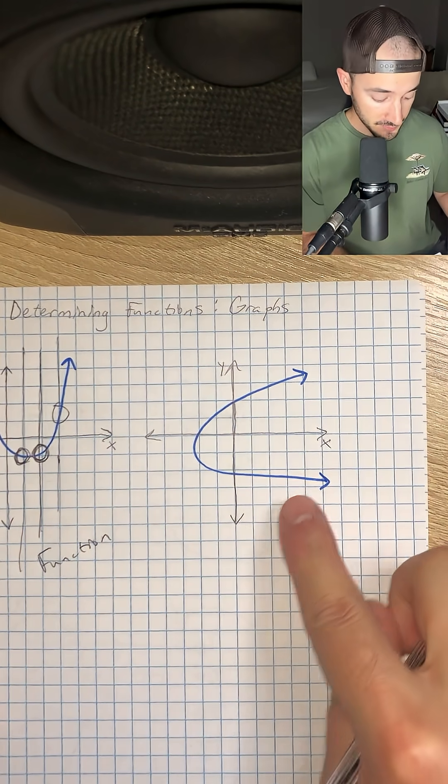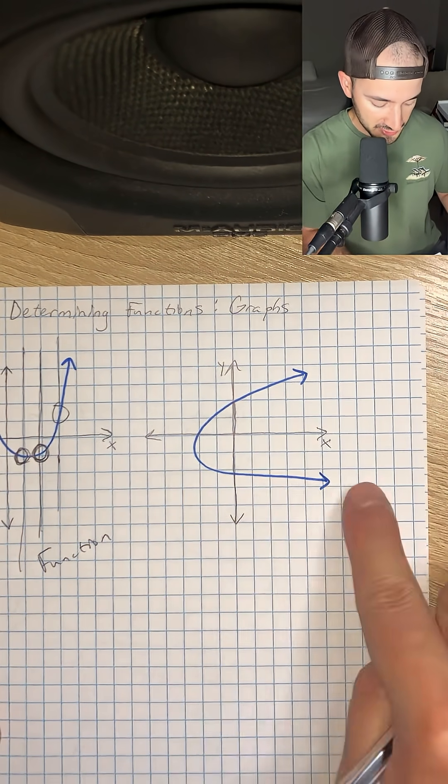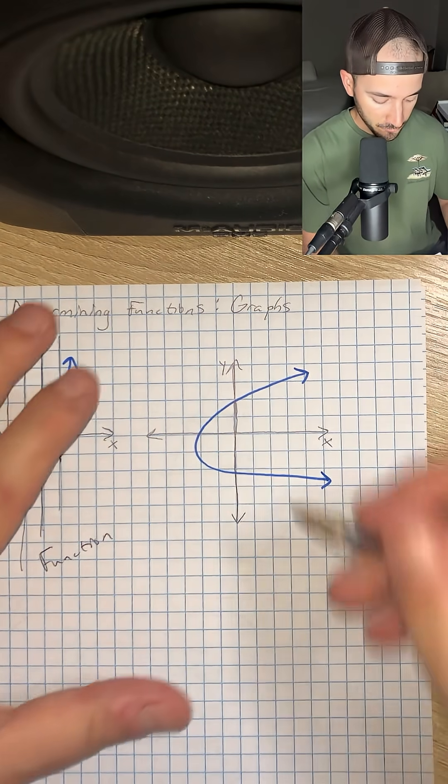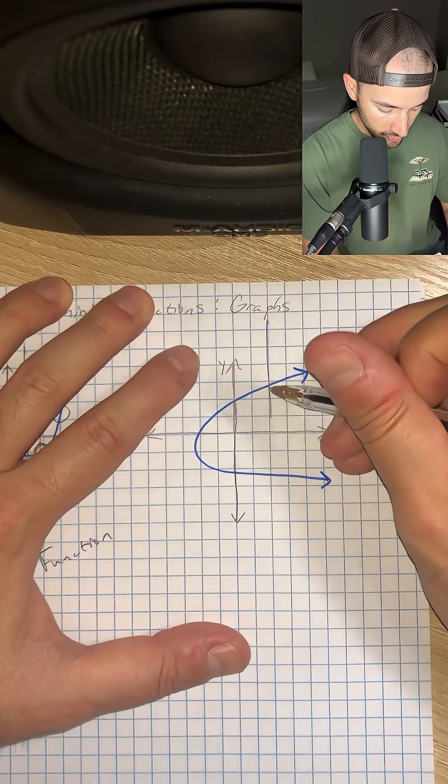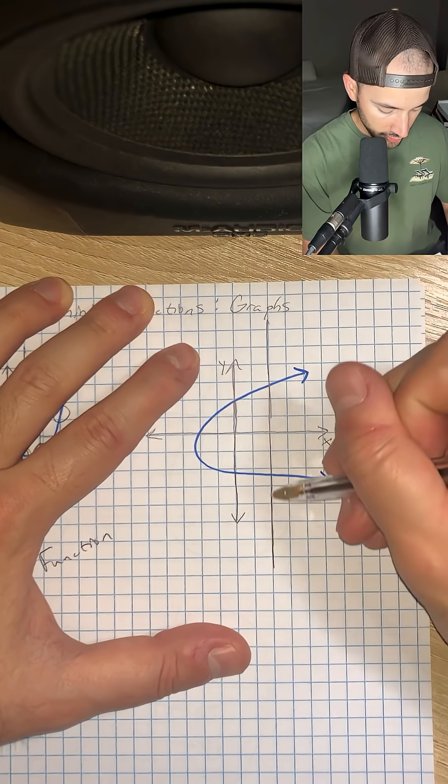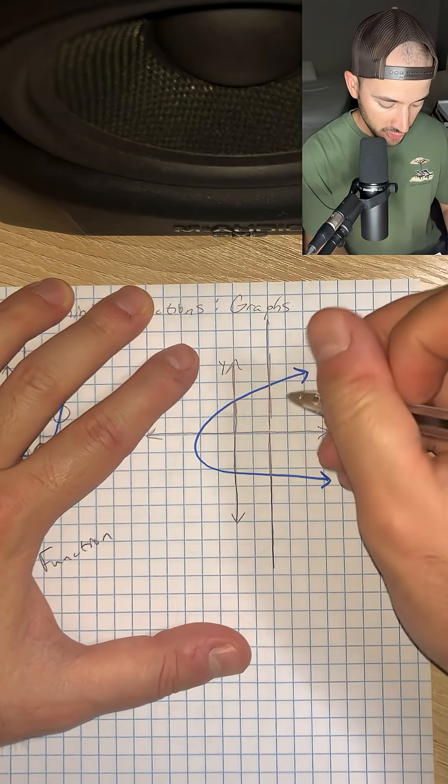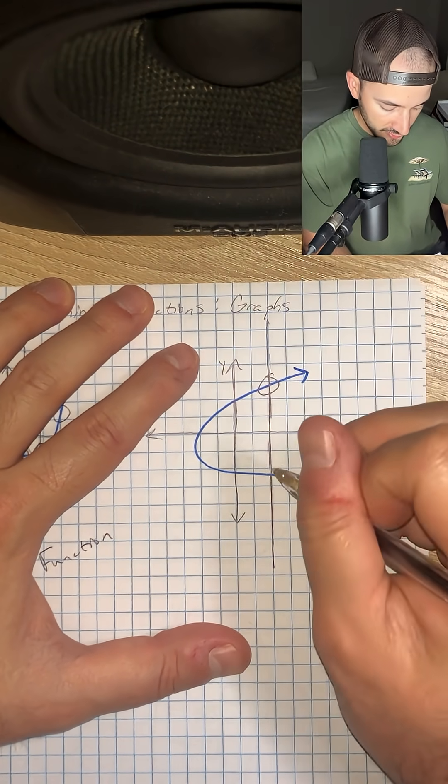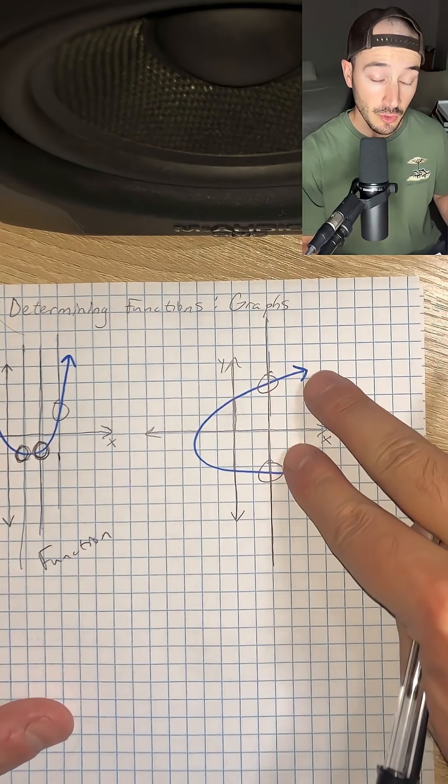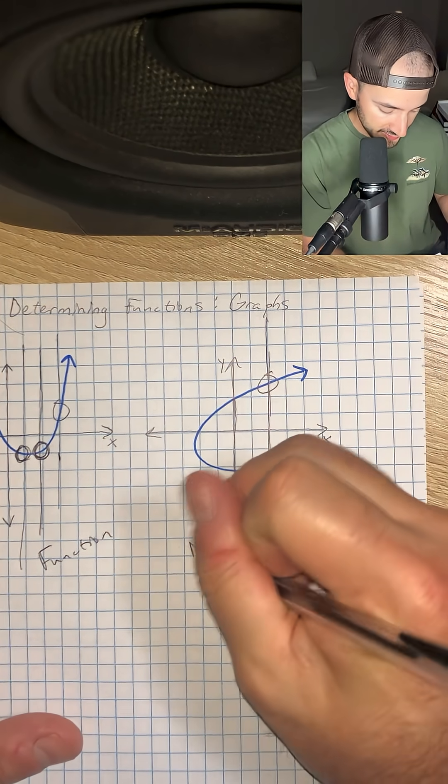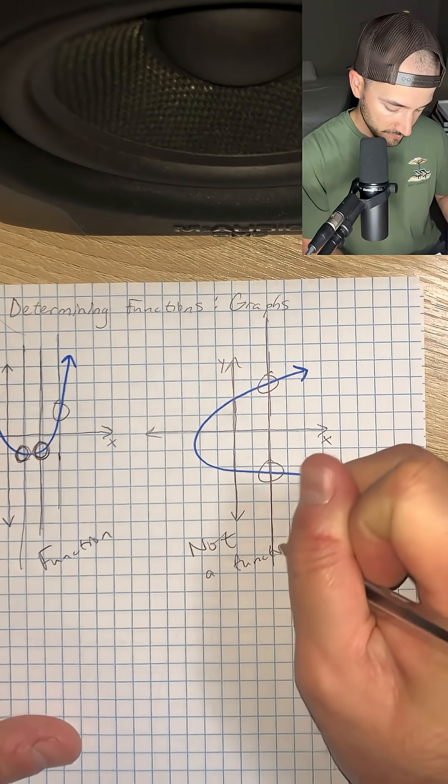Now let's look at this example. This time we have this graph that looks like this, and if we draw a vertical line, let's say right here, all the way down, notice that our vertical line crosses through the graph once and two times. It crosses more than once, which means it is not a function.